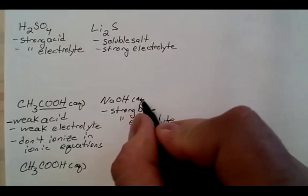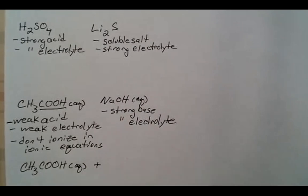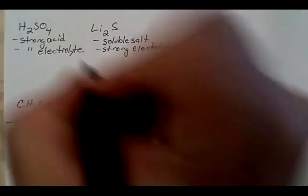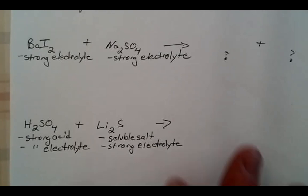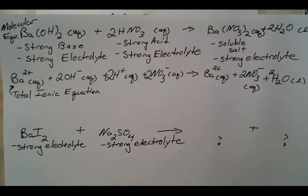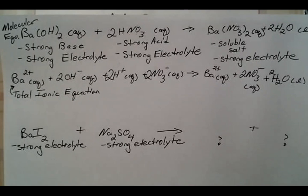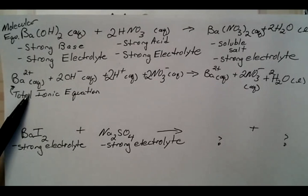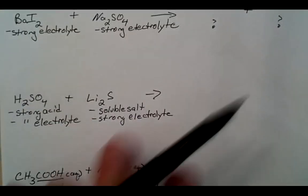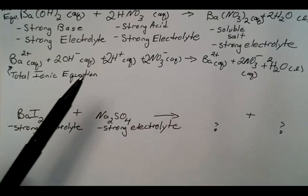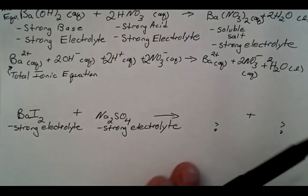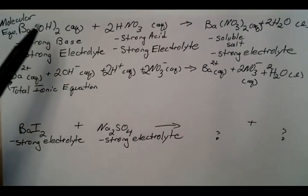Think about what happens with all of the other compounds and what you'd need to do to balance these reactions. For today, for the other three reactions, write a total ionic equation showing exactly what would be in solution before and after, and make sure it is balanced. We'll check answers in the next video before proceeding with the next part.